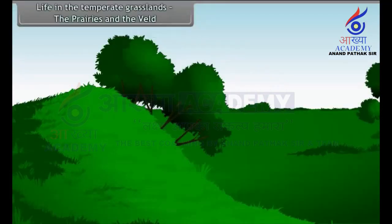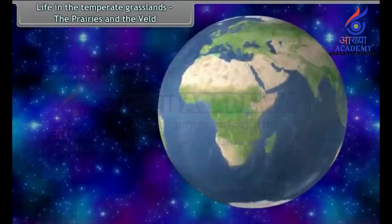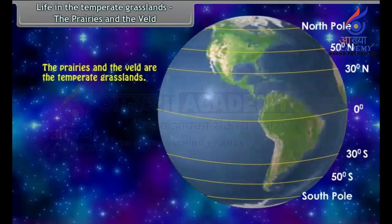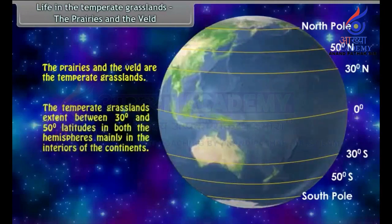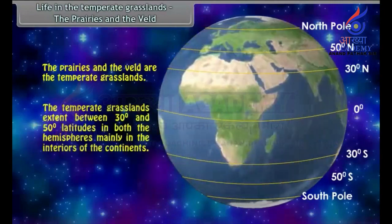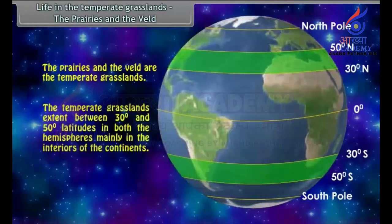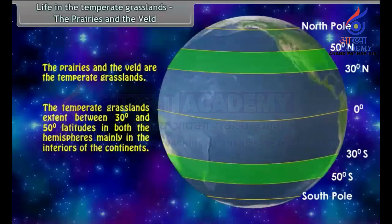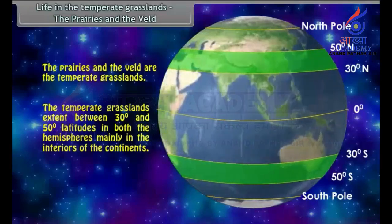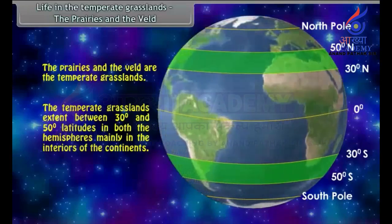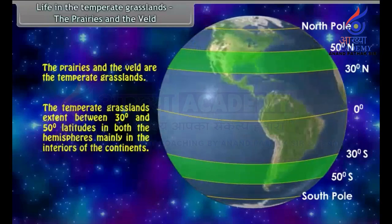Life in the Temperate Grasslands: The Prairies and the Veld. The Prairies and the Veld are the Temperate Grasslands. The Temperate Grasslands extend between 30 degrees and 50 degree latitudes in both the hemispheres, mainly in the interiors of the continents.